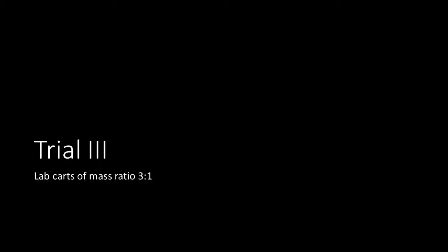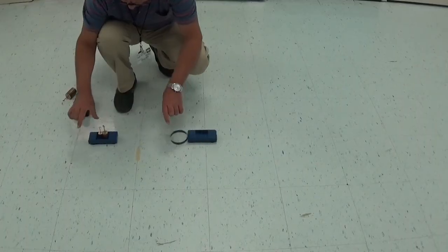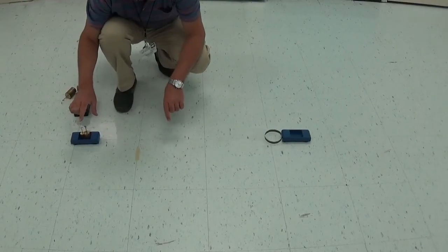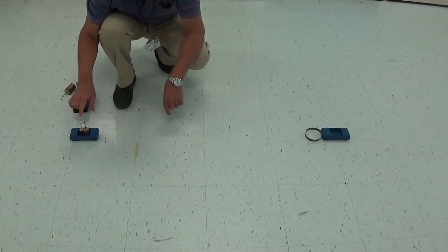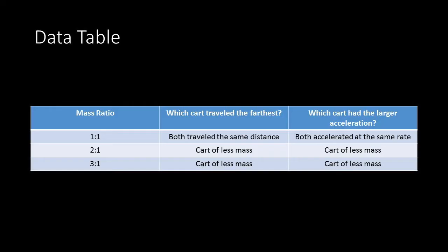Trial three: the lab carts have a mass ratio of 3 to 1, so 1500 grams to 500 grams. As you would expect, the cart of less mass traveled the farthest, and the cart of less mass had the larger acceleration.